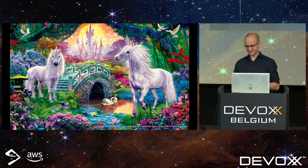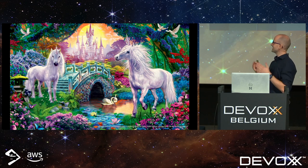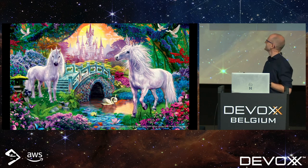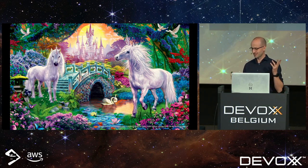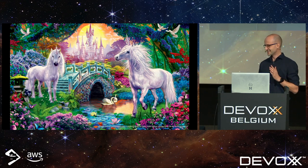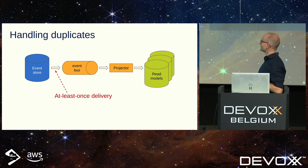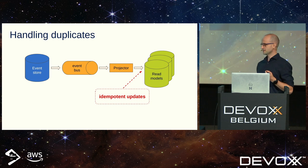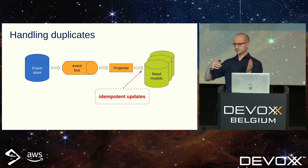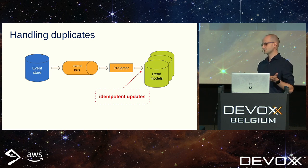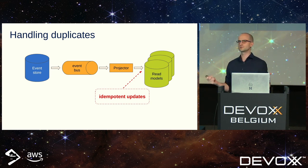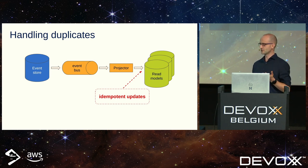Handling duplicates — this is a nightmare in distributed systems. Let me tell you a story: in a fairyland there are two unicorns called 'exactly-once delivery' and 'transaction between two aggregates' — none of them exist. So why duplicates? You can produce duplicates on the producer side, and even if you filter them there, you must be ready to handle them on the consumer side. You can get them during some restarts or crashes. The best way is to have idempotent updates — processing the same event twice changes nothing. But some projections are not idempotent by default — for example, counting an average: processing the same event twice will corrupt the result.